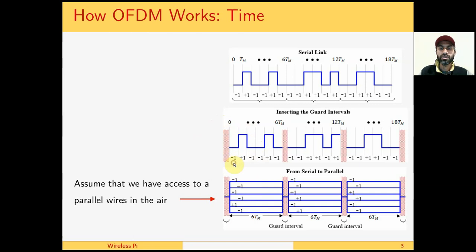Then we send each symbol onto one parallel wire. As a result of this strategy, each symbol which occupied time tm is now occupying a time duration of 6tm.